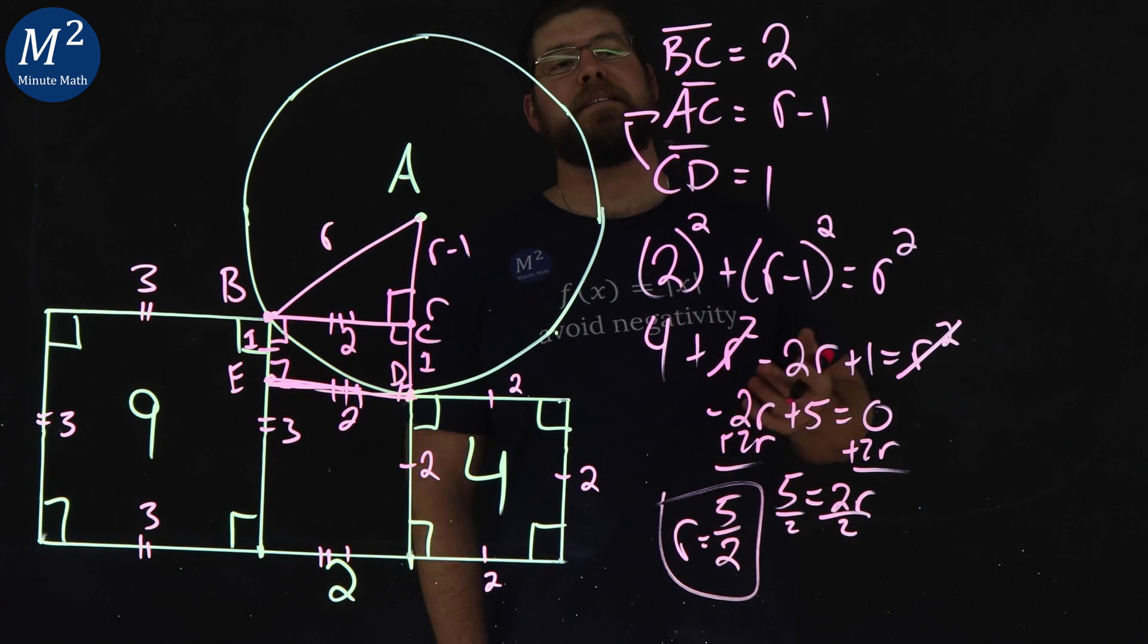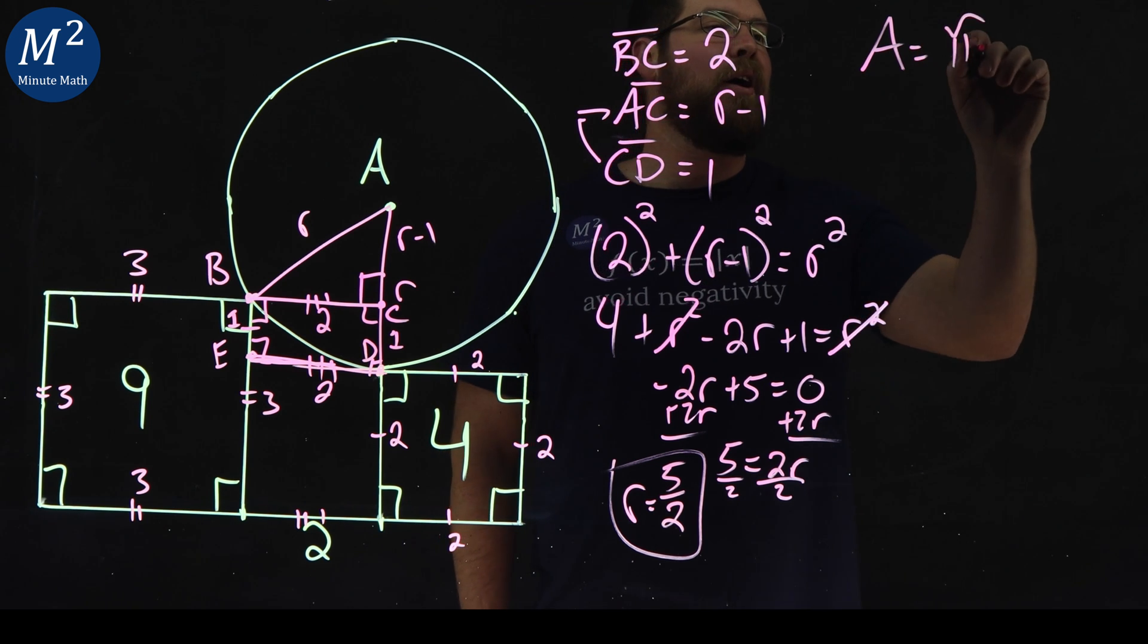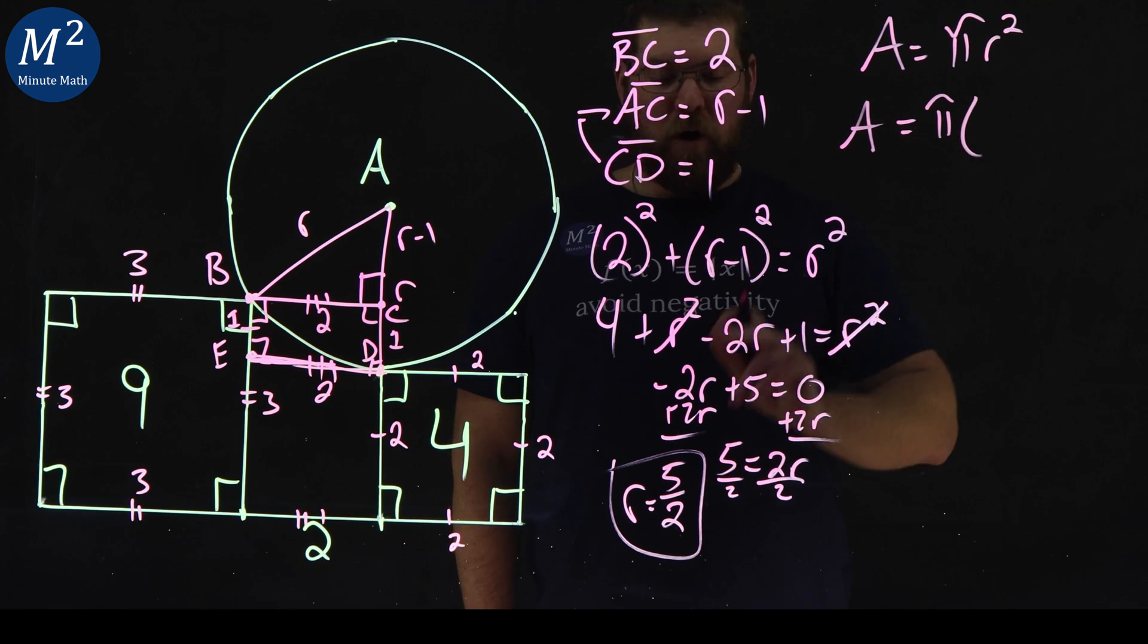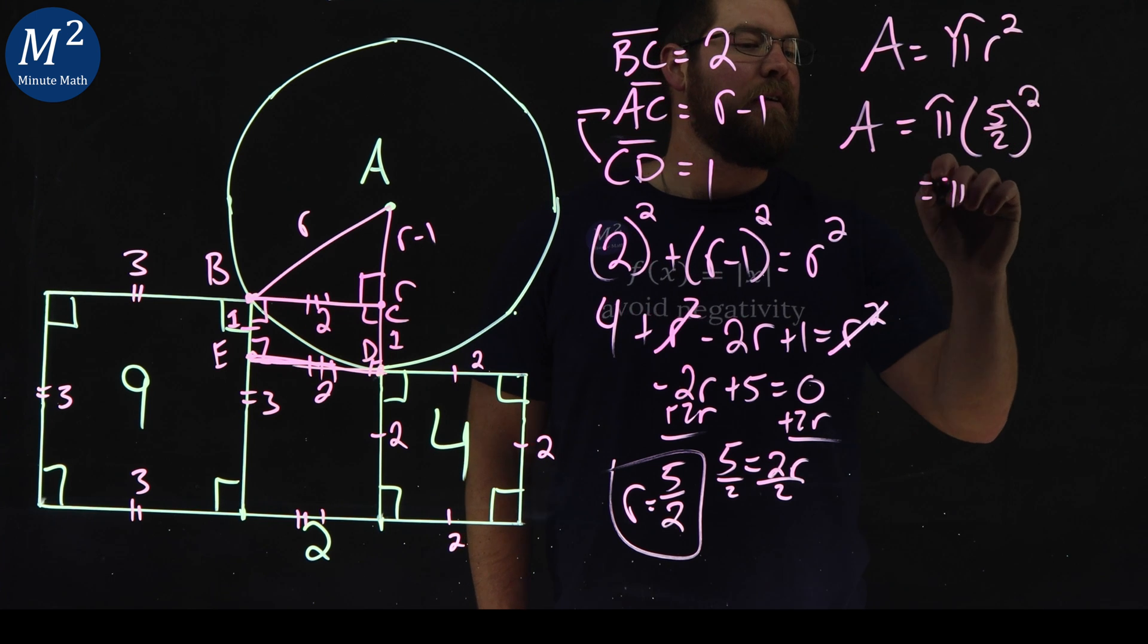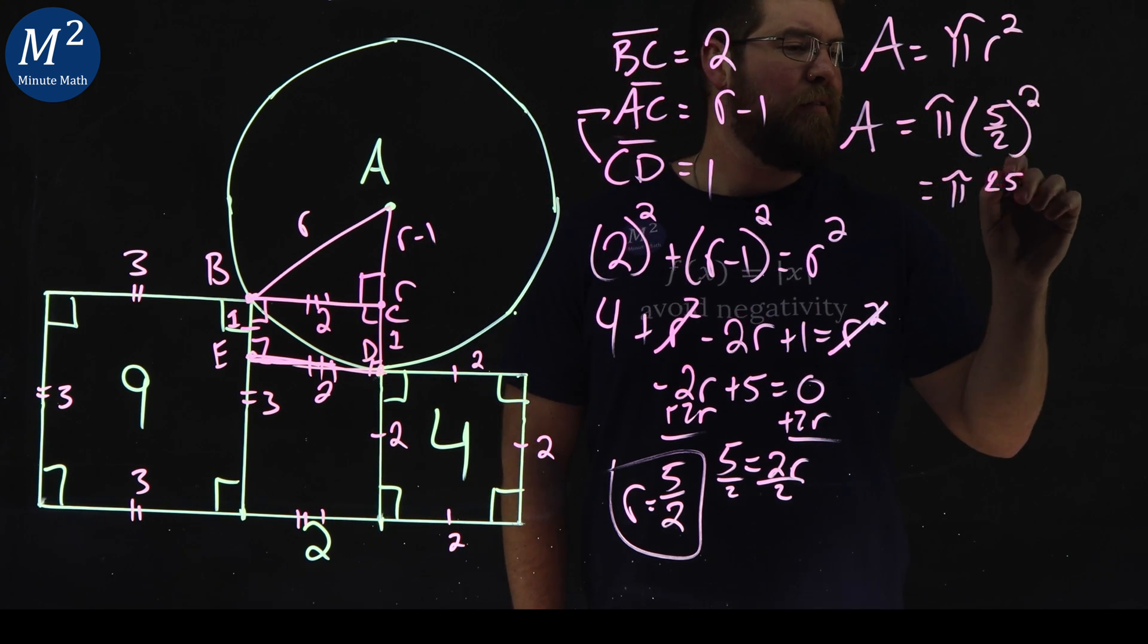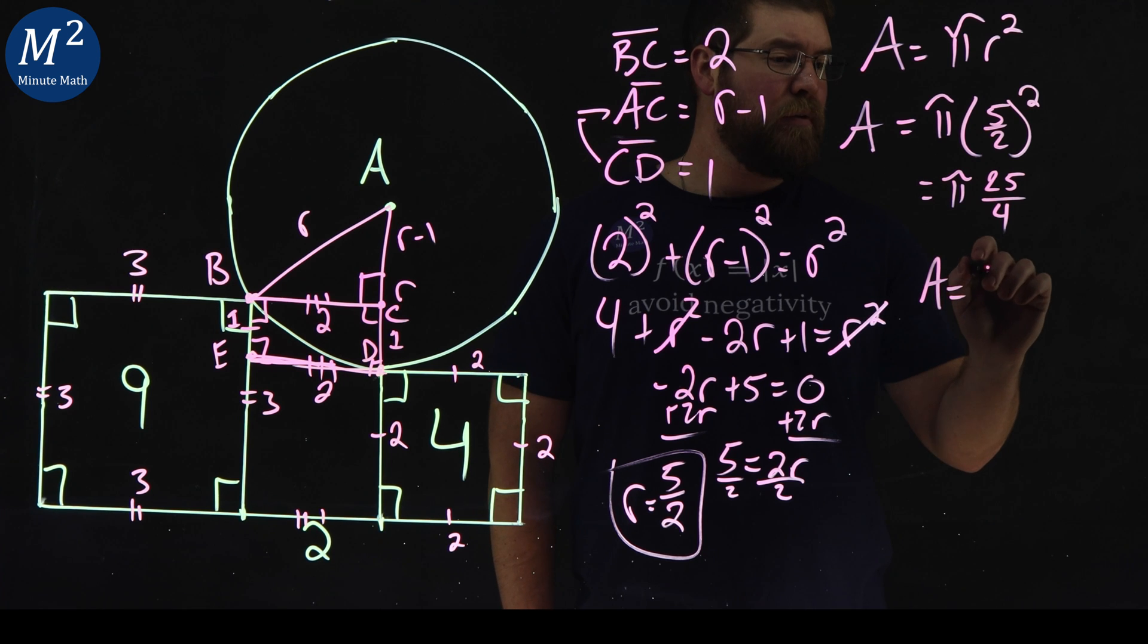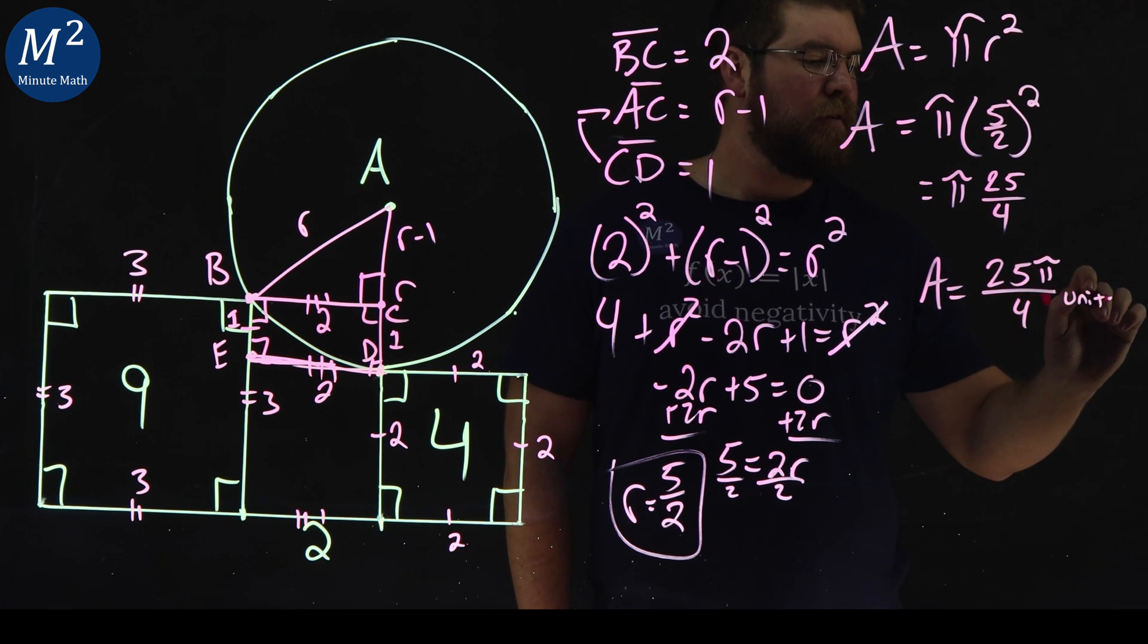But they didn't ask us to find the radius. We want to find the area of the circle. Area equals pi R squared when you're dealing with a circle. So our area here is pi times R five halves all squared, pi five halves squared. Multiply that out as 25 over four. And so our area is equal to 25 pi over four units squared.